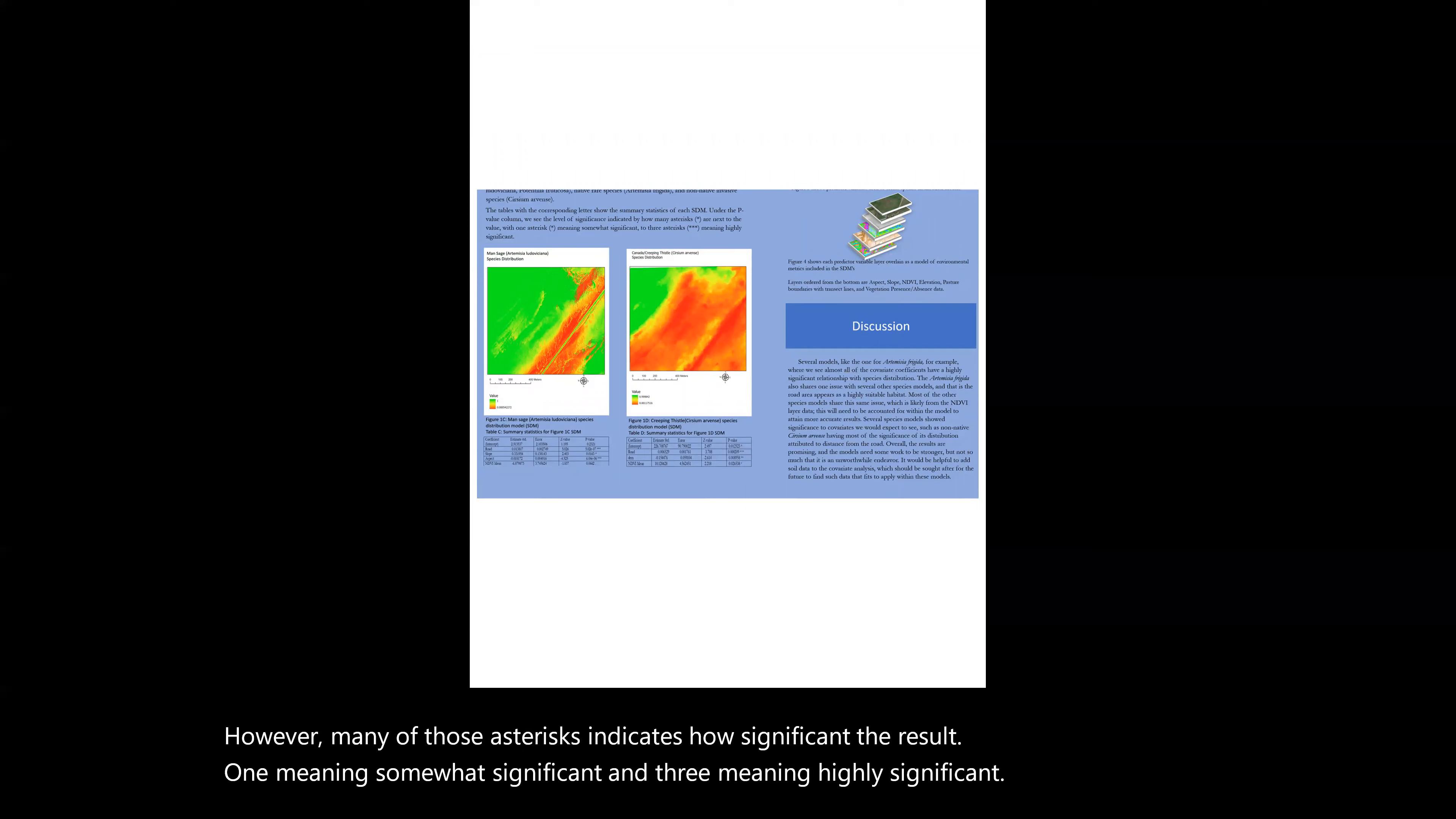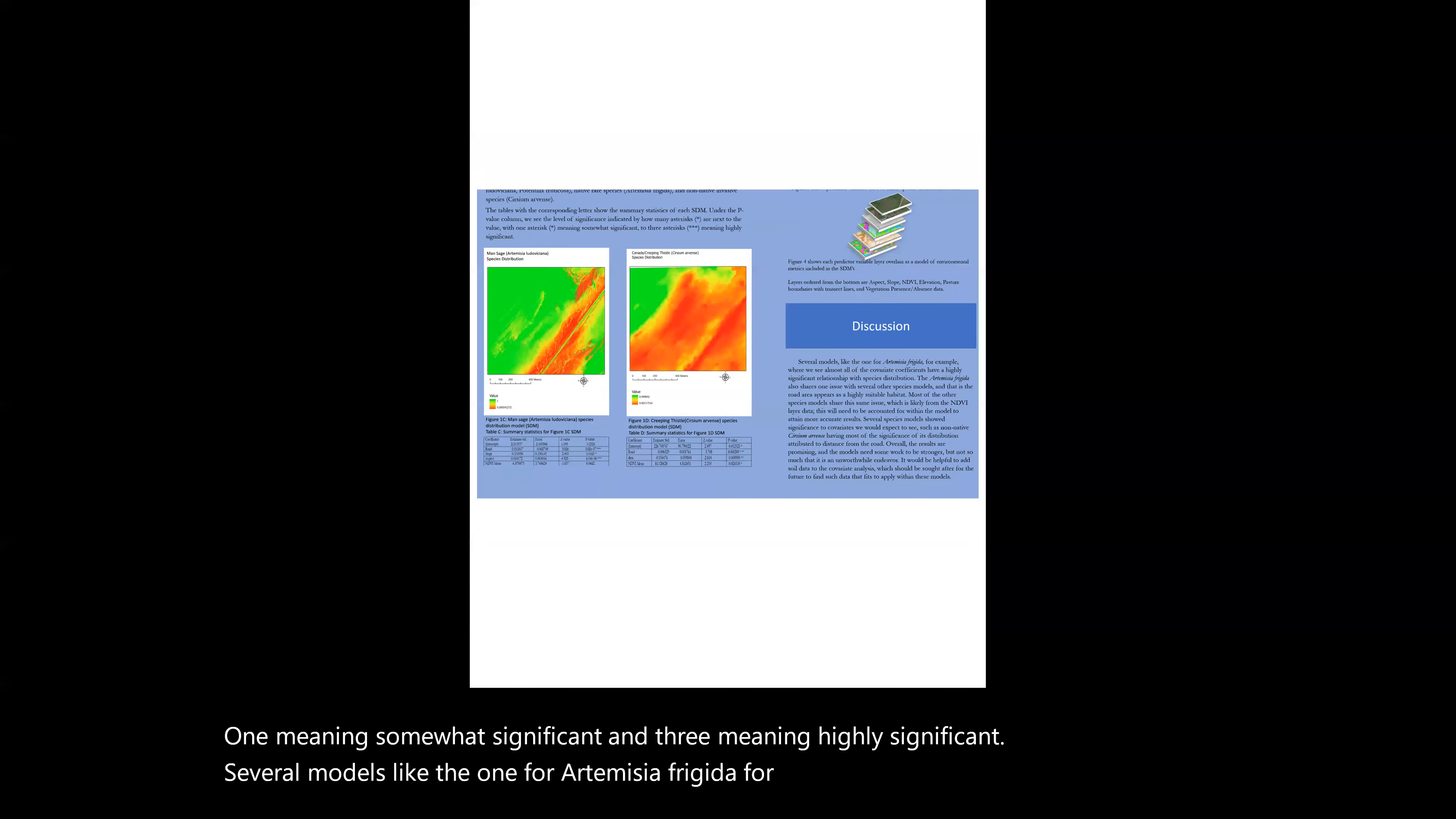Several models, like the one for Artemisia frigida, for example, we see very high covariate coefficients with highly significant relationships to species distribution. This indicates that our model accurately reflects what's driving that species distribution.